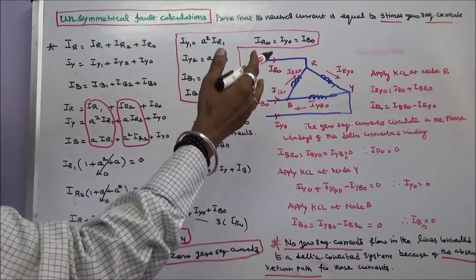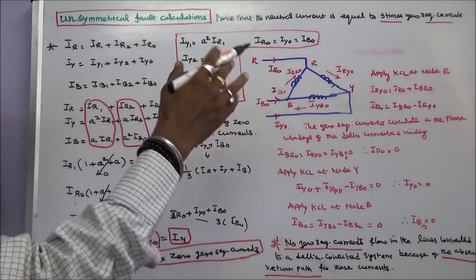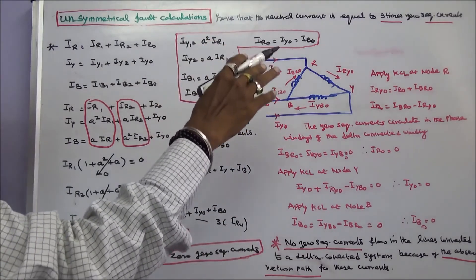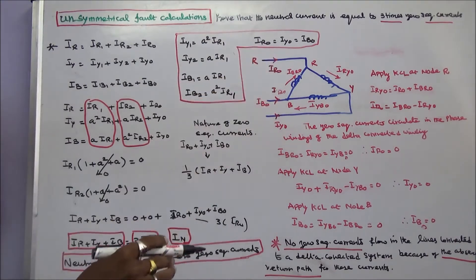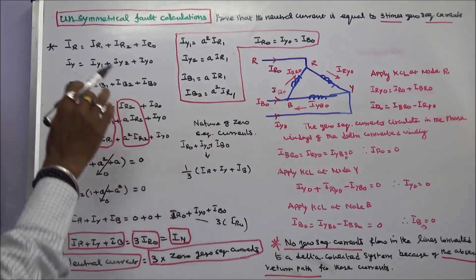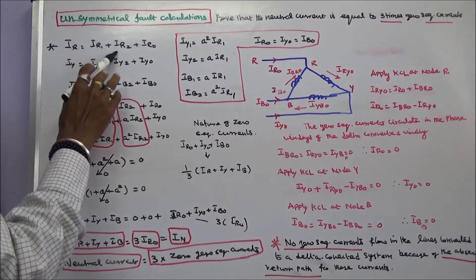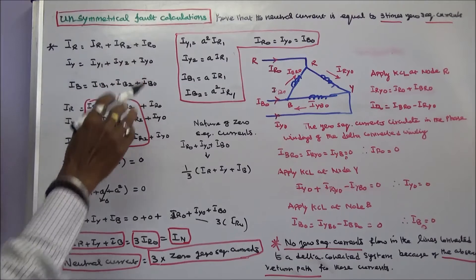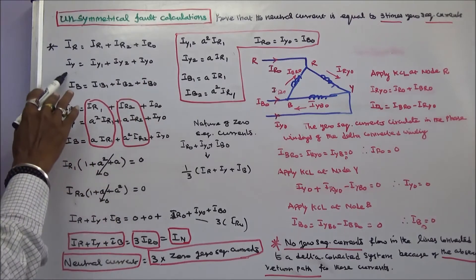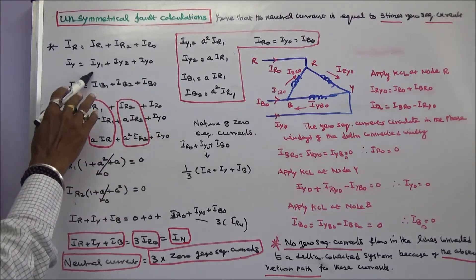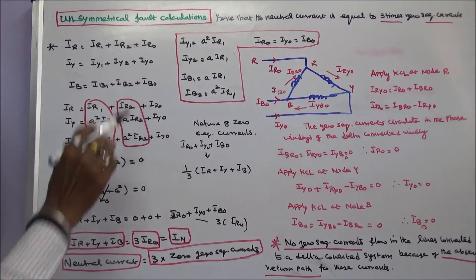In this class we proved that the neutral current is equal to 3 times the zero-sequence current. We know that IR is equal to IR1 plus IR2 plus IR0. IY is equal to IY1 plus IY2 plus IY0.